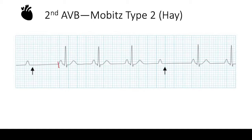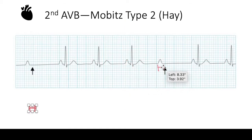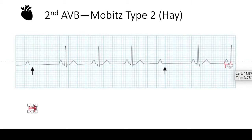Looking at this rhythm strip, the PR interval in each beat is the same — first beat, second, third — and then you have the dropped beat. Measuring the QRS complexes shows the same regularity. This is the quick way to determine type one versus type two: measure the PR intervals and QRS complexes, and you'll immediately know which type you're dealing with.